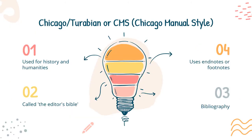Chicago or Turabian, also known as CMS — that's Chicago Manual Style — is used for history and humanities, called the Editor's Bible. It uses endnotes or footnotes, then ends with a bibliography.